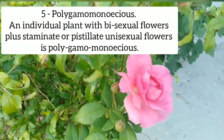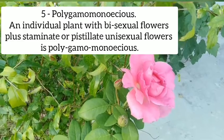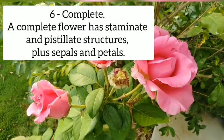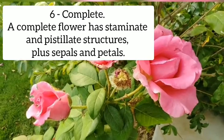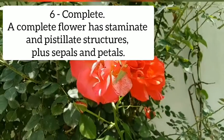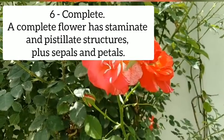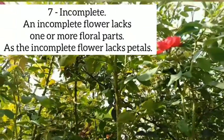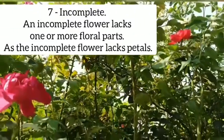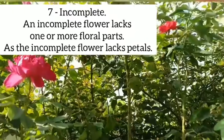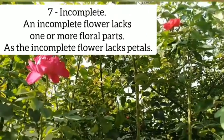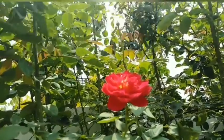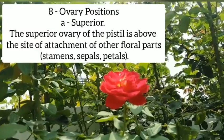Fifth, polygamo-monoecious: an individual plant with bisexual flowers plus staminate or pistillate unisexual flowers is polygamo-monoecious — 'poly' means many. Sixth, complete: a complete flower has staminate and pistillate structures plus sepals and petals. Seventh, incomplete: an incomplete flower lacks one or more floral parts, such as petals.